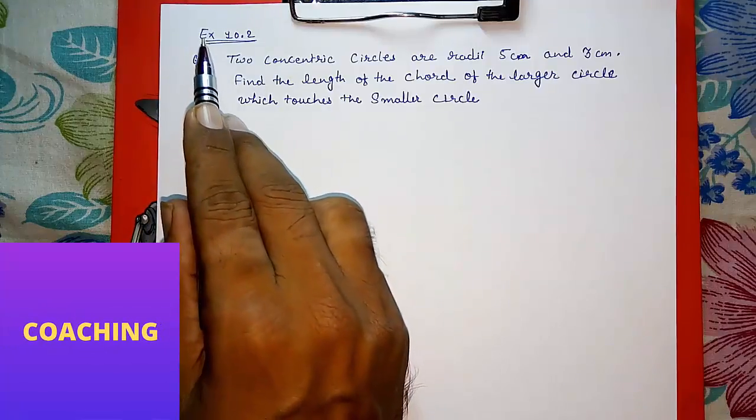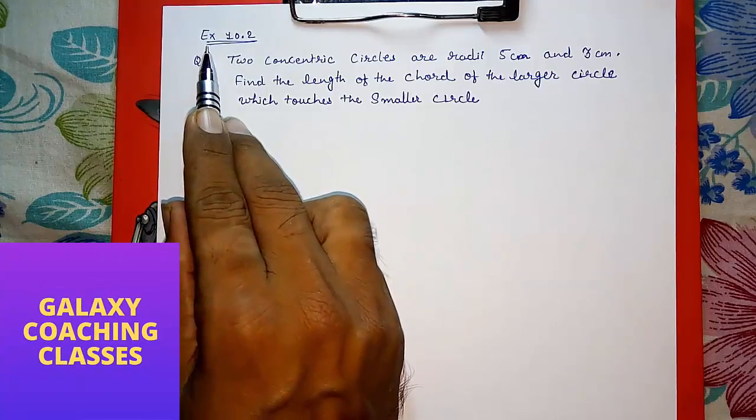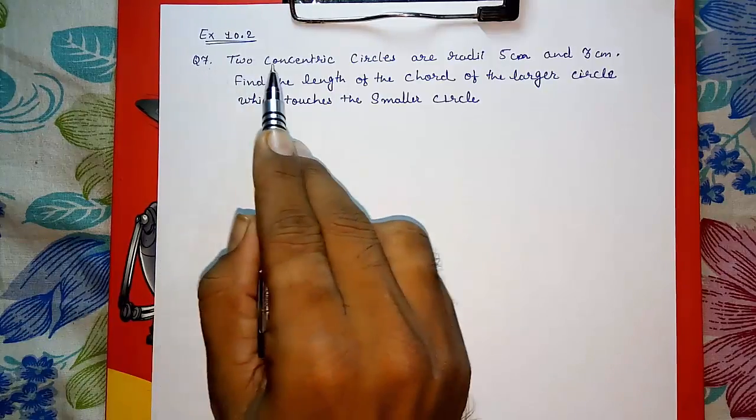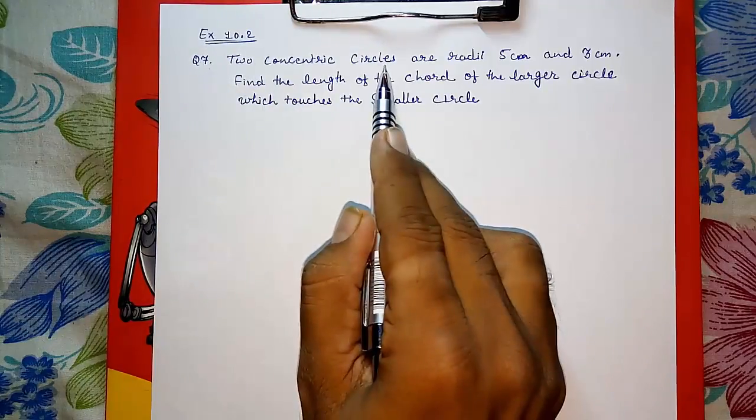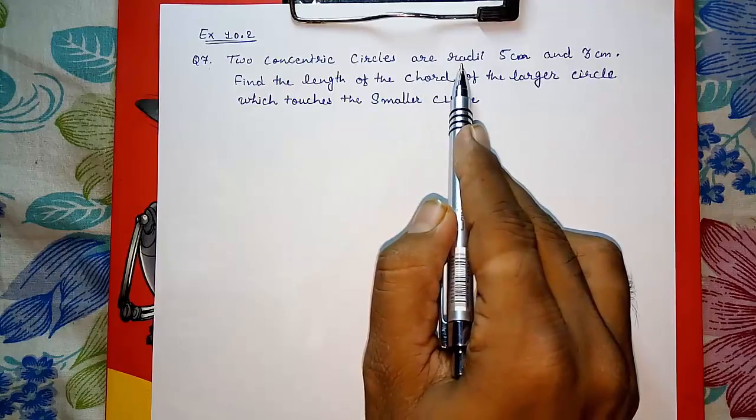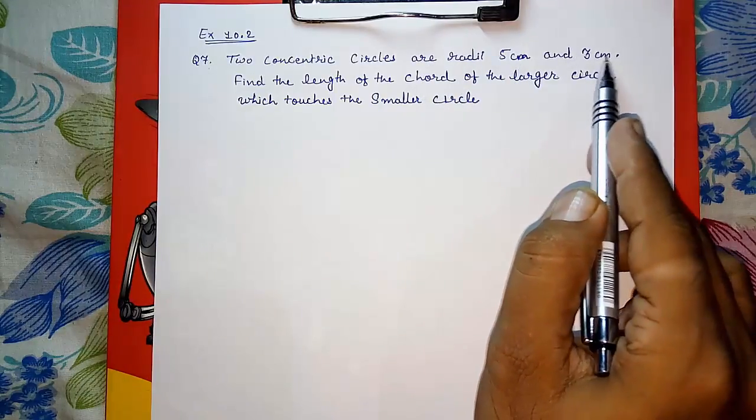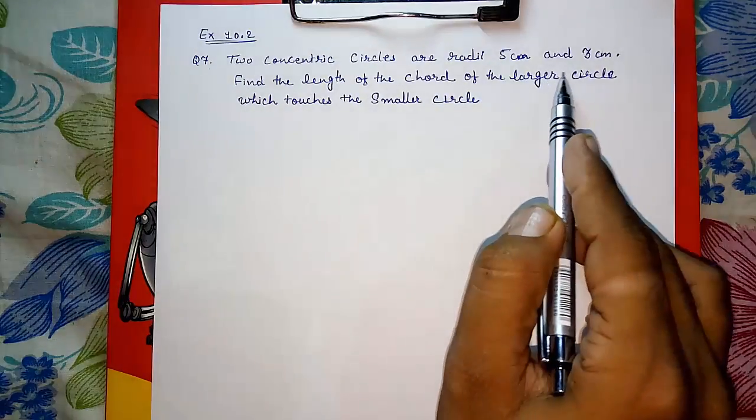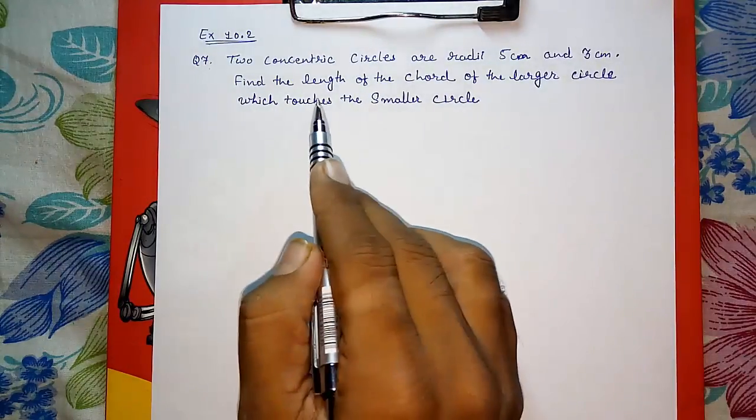Hello friends, today we are going to solve CBSE class 10th exercise 10.2 question number 7. Two concentric circles are of radius 5 centimeters and 3 centimeters. Find the length of the chord of the larger circle which touches the smaller circle.